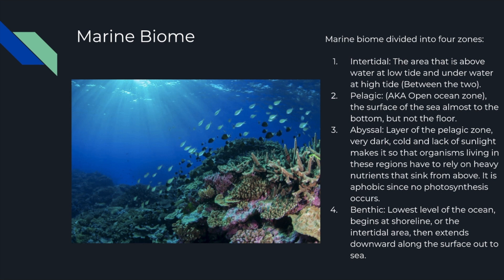The abyssal zone is a layer of the pelagic zone. Very dark, cold, and lack of sunlight makes it so that the organisms living in these regions have to rely on heavy nutrients that sink from the surface above. It is aphotic since no photosynthesis occurs. The benthic zone, which is the fourth zone, is the lowest level of the ocean. It begins at the shoreline, or the intertidal area, then extends downward along the surface out to the sea.